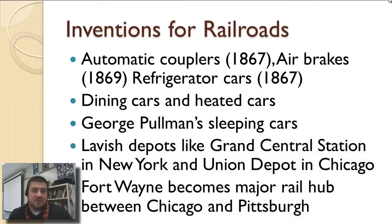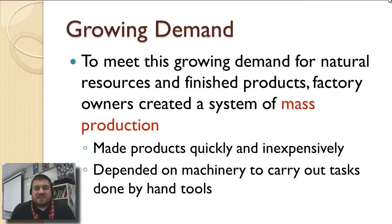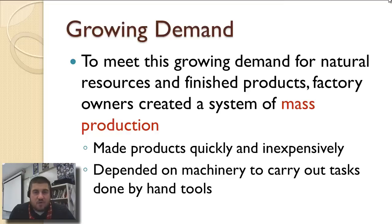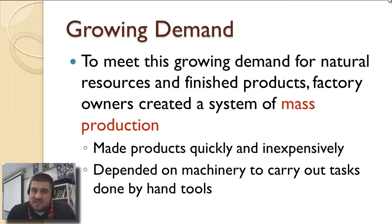To meet the growing demand for new stuff, factory owners create something called mass production — building things on a massive scale. It makes products quickly and inexpensively, depending more on machinery than the handcraft methods used before.